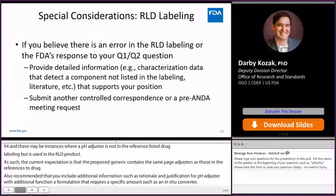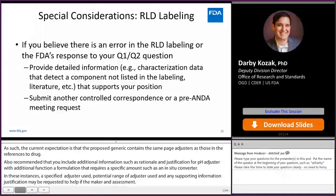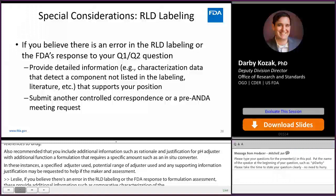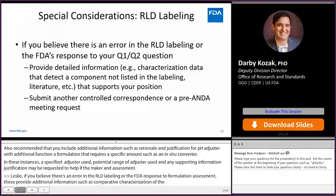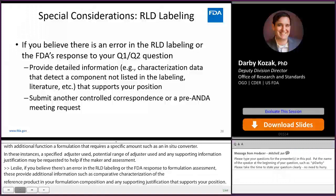Lastly, if you believe there is an error in the RLD labeling or in the FDA's response to your formulation assessment, please provide additional information such as comparative characterization of the reference product in your formulation composition and any supporting justification. This can be submitted as a new control correspondence or as a pre-ANDA meeting request depending on the complexity of the product and the complexity of the scientific justification.